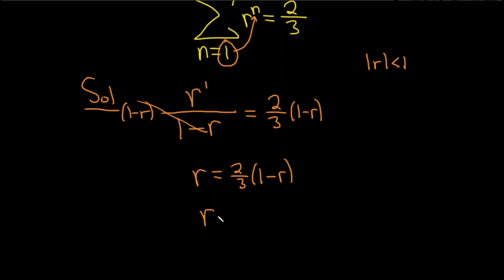So r is equal to, let's go ahead and distribute, 2 thirds times 1 is 2 thirds, and 2 thirds times r is just 2 thirds r.